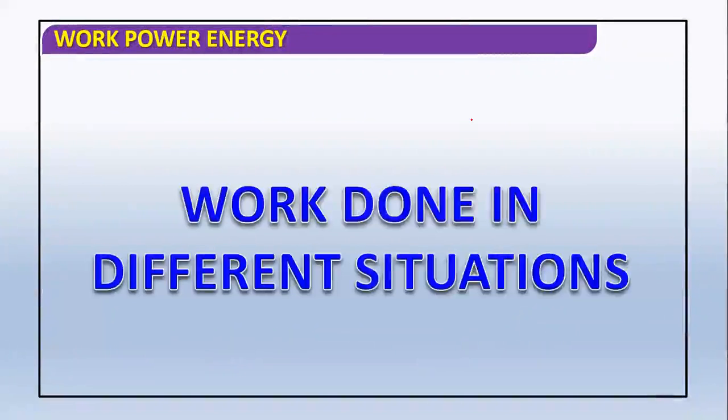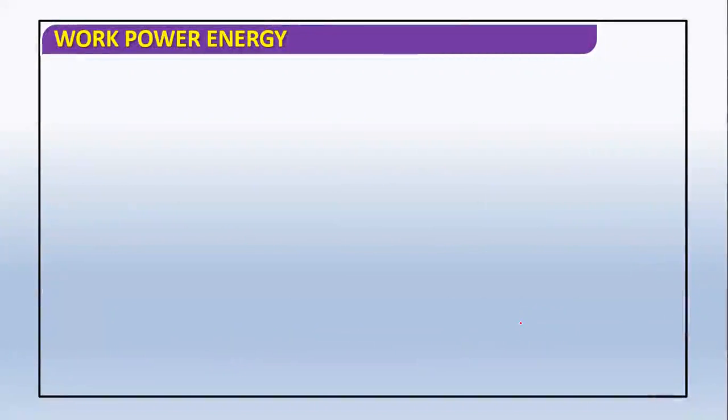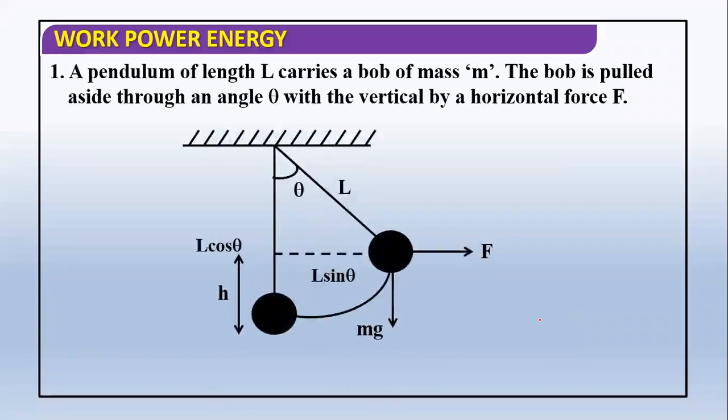Now we will discuss work done in different situations. Situation one: a pendulum of length L carries a bob of mass m. The bob is pulled aside through an angle theta with the vertical by a horizontal force F. We'll analyze the work done by different forces in this condition.